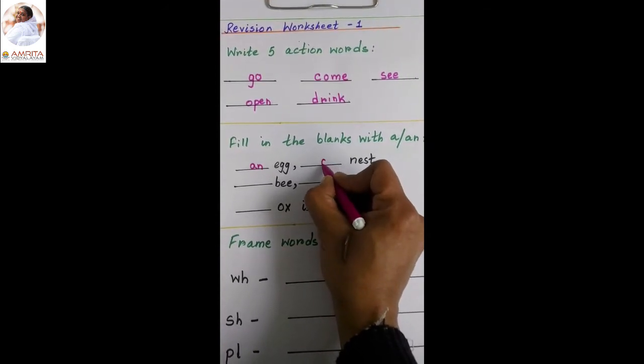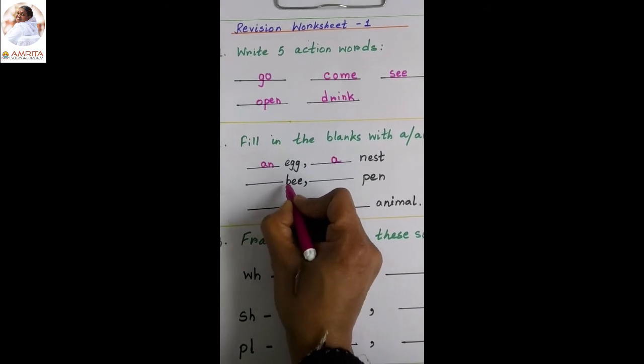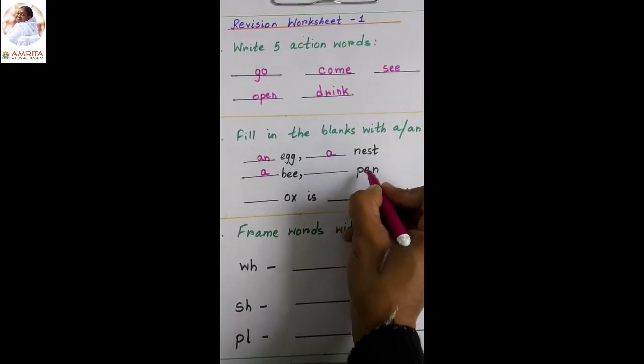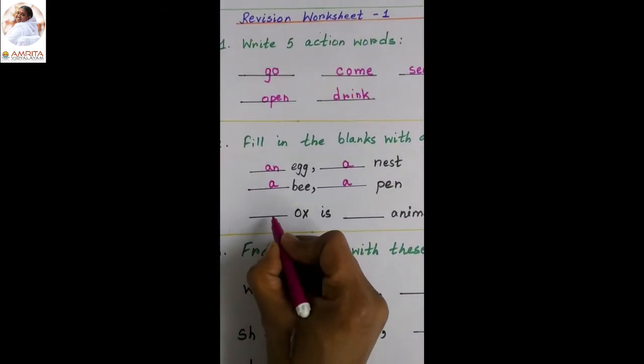So yes, you all know. We will write a nest. B-E-E bee. Again consonant. A bee. Dash pen. A pen.